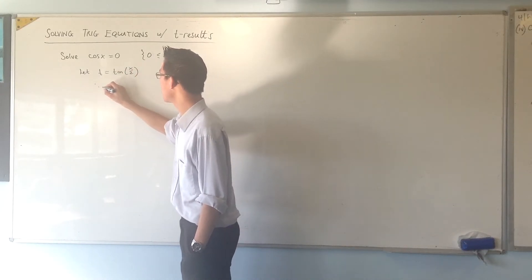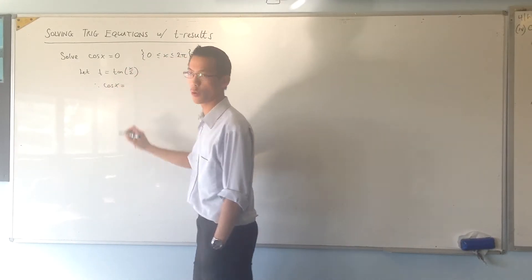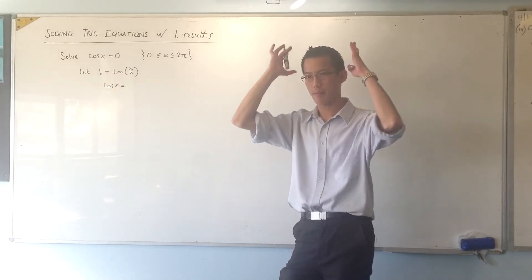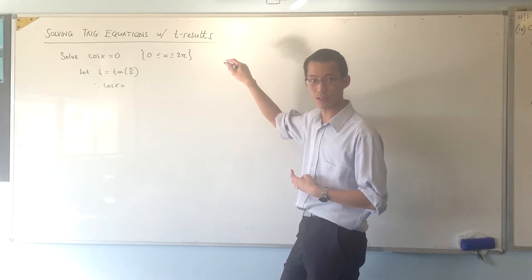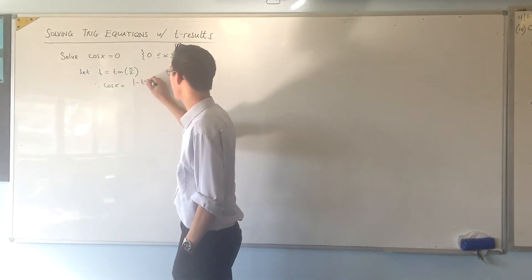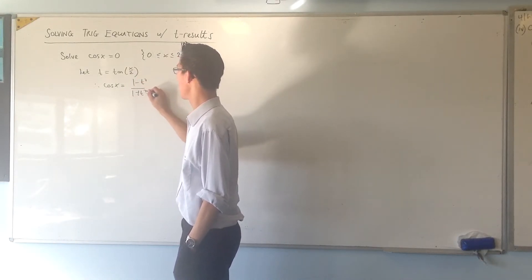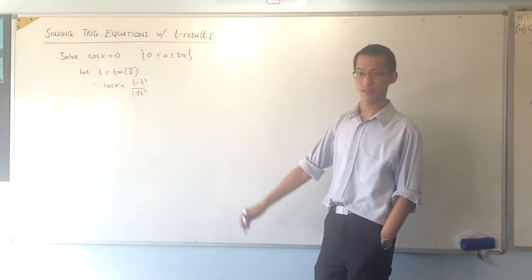If that's T, then you can go straight to saying, well, therefore, cos x ought to be equal to, and then you're trying to remember the T result. If you struggle a little bit, draw your triangles. But hopefully most of you know by now it's 1 minus T squared on 1 plus T squared. So that's just the standard T result.